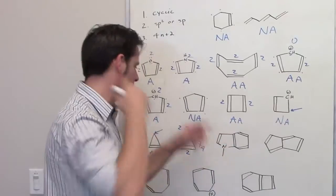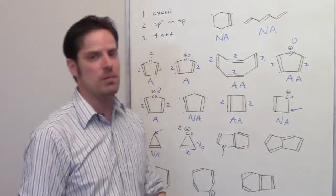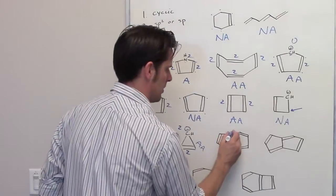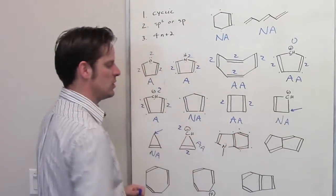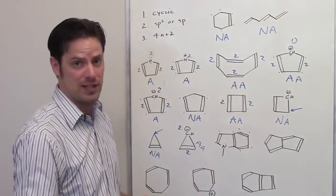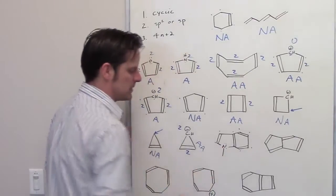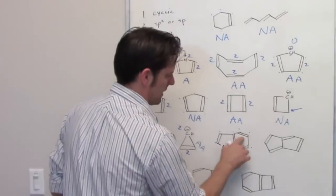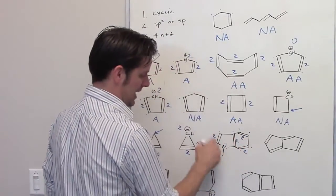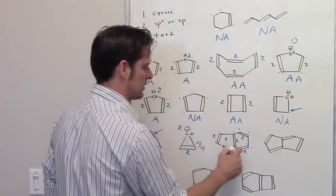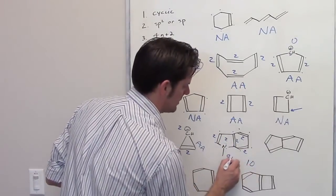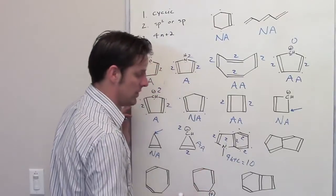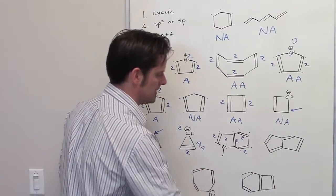Now look at this one — it's actually a bicyclic molecule. Can bicyclic molecules be aromatic? Absolutely. Are all of the atoms sp2 or sp hybridized? All carbon atoms are sp2. The nitrogen has lone pairs — remember, lone pairs are flexible — so it can re-hybridize to become sp2. It meets criteria 1 and 2. Let's count pi electrons: four double bonds give 2 + 2 + 2 + 2 = 8, plus a set of lone pairs on nitrogen gives 2 more — total 10. Can I solve 4n + 2 = 10? Yes — if n = 2, that works. So this molecule meets all three criteria and is aromatic.